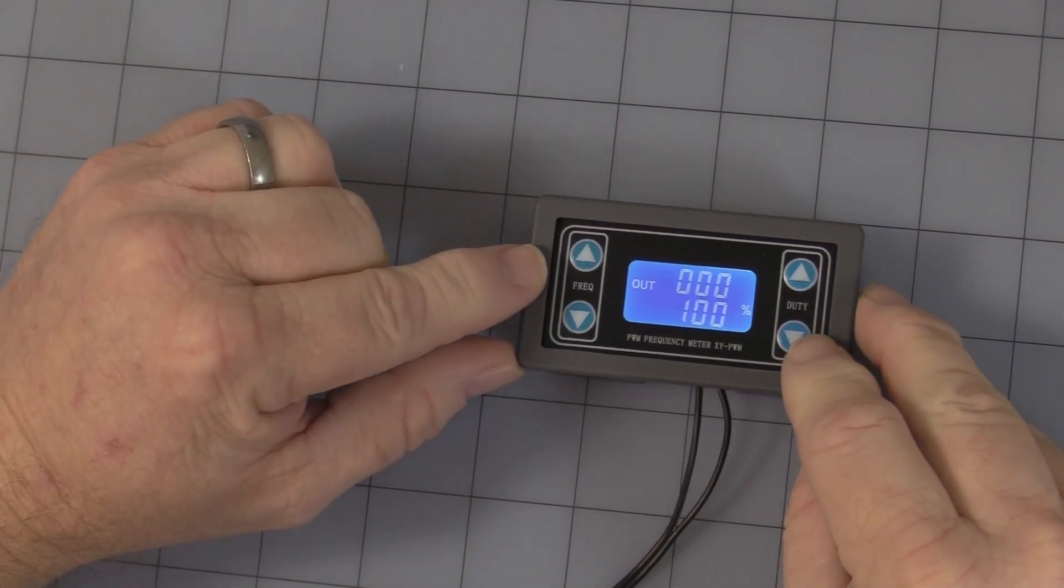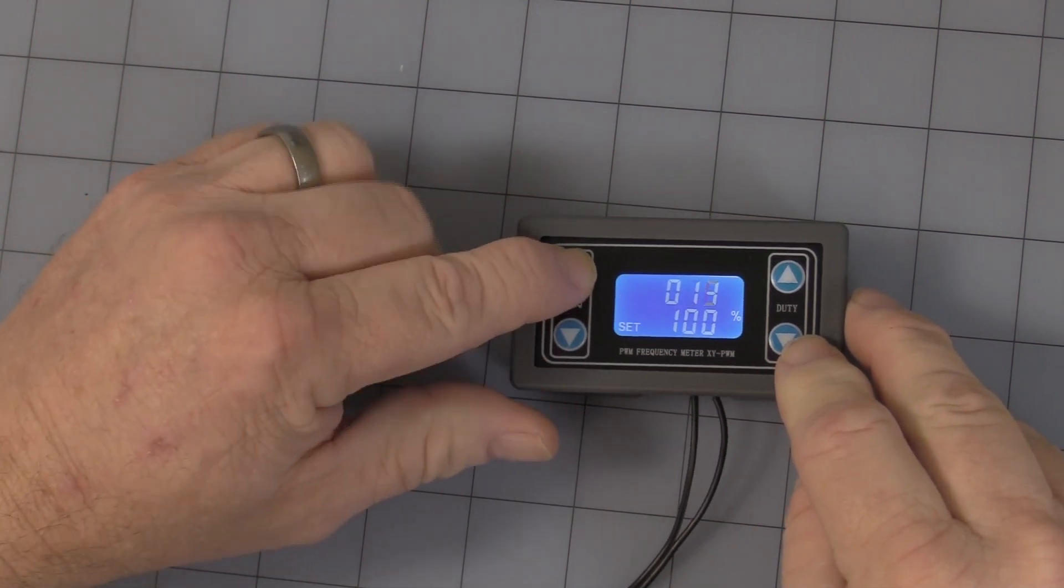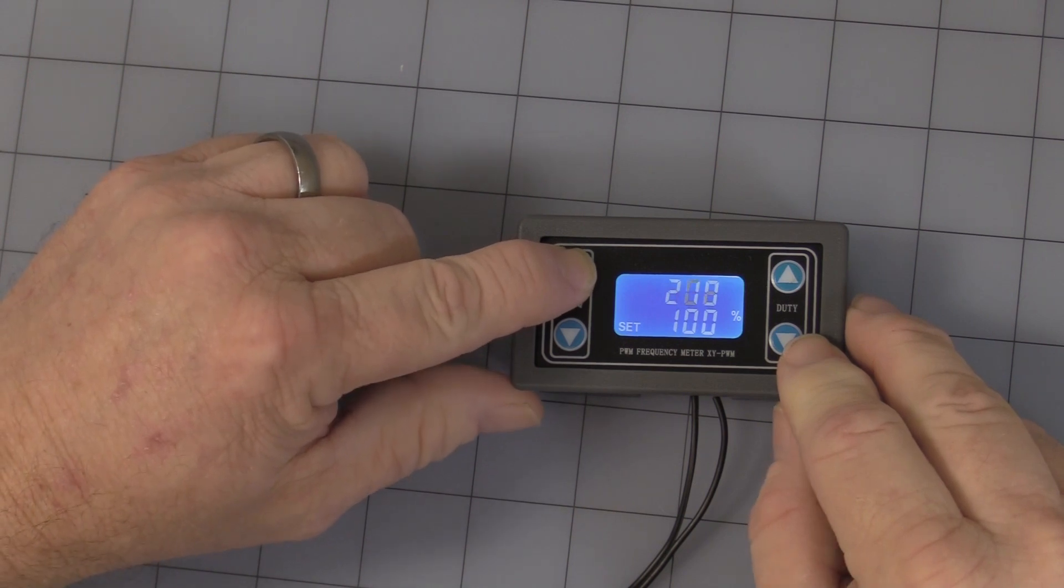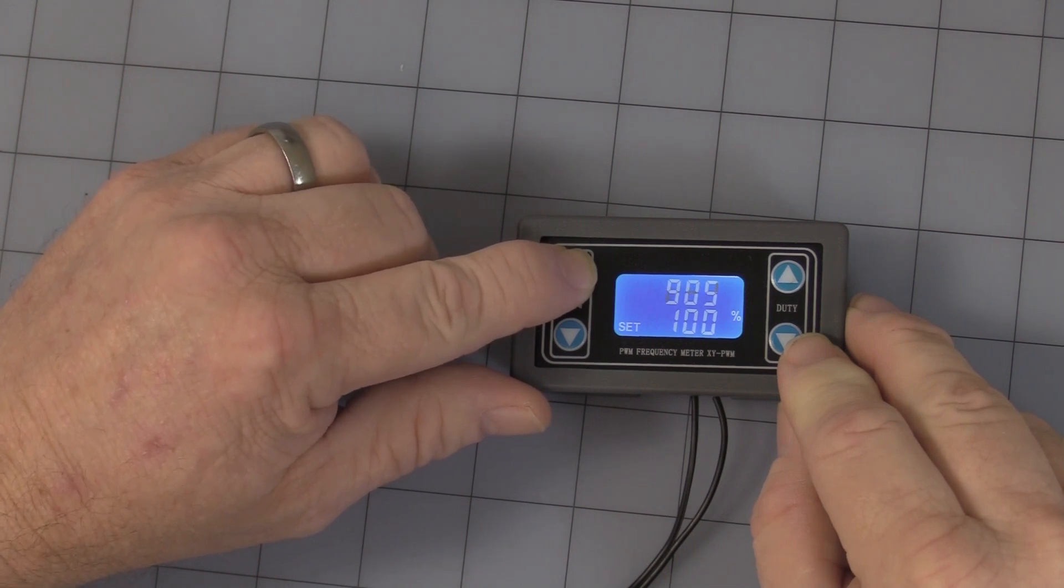Now on the left hand side you have frequency, and you can go up and down arrow, press and hold. Now this has four ranges, and it is auto-ranging. First one is 1 to 999 hertz with 1 hertz resolution.